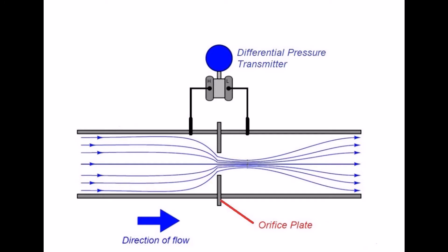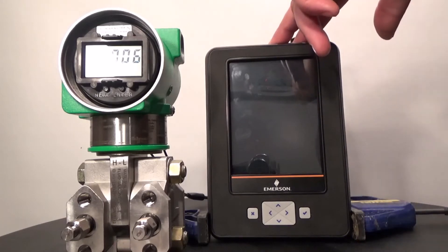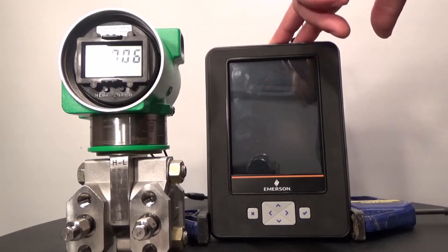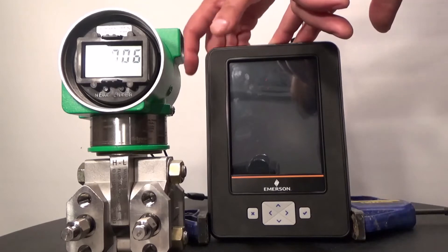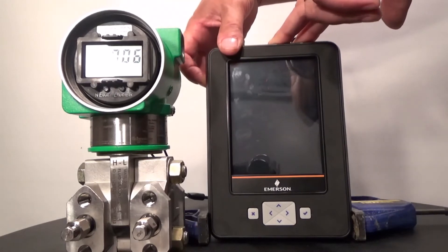The transmitter configuration procedure is as follows. Once the TREX communicator is connected to the communication terminals of the transmitter, press the on button, which is located on the left side of the TREX communicator. It's an orange button — press it.